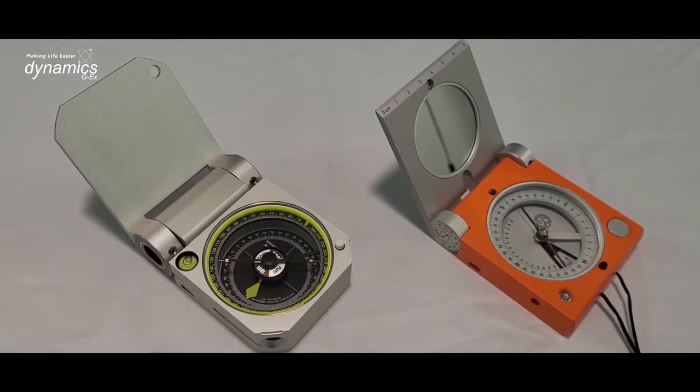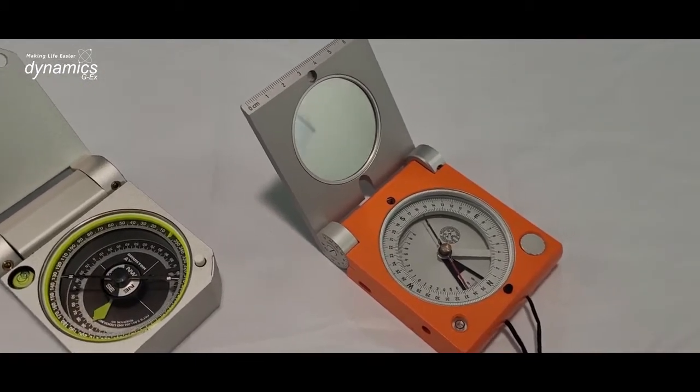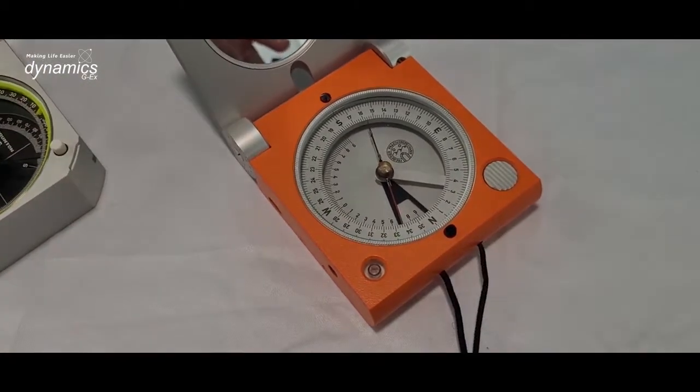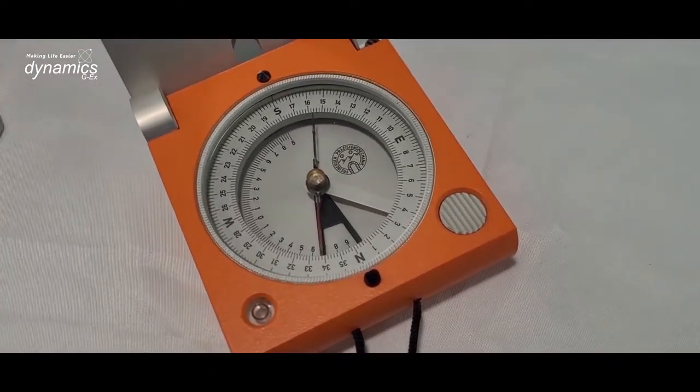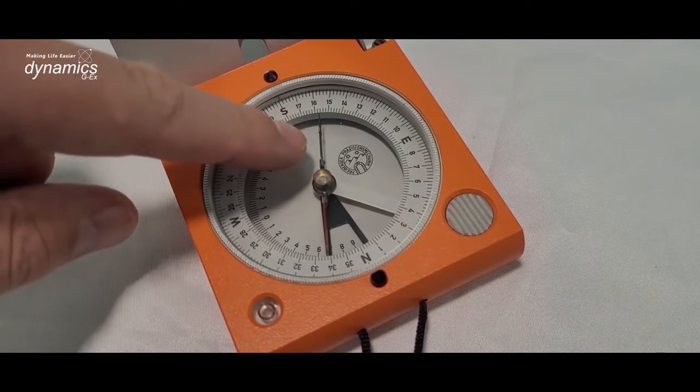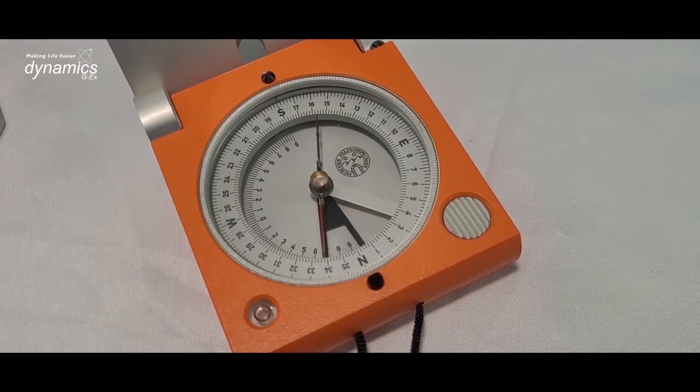This video will be focused on balancing the Brunton compass but we've brought in a Freiburg compass just out of comparison. You see how people are used to balancing this. You'll notice a copper wire on the needle there which is used to slide up and down and that's what balances a traditional compass.